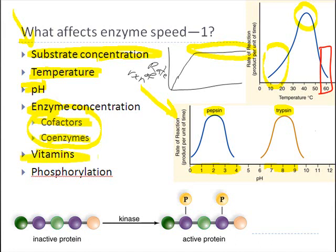Vitamins can function as cofactors — in fact, vitamins often function as cofactors and are frequently necessary to make a coenzyme that will then impact enzyme activity. Phosphorylation can also impact enzyme activity: by simply adding a phosphate group onto an enzyme, you can either activate it or deactivate it — more commonly, activate it. For example, here's an inactive protein — by putting a couple of phosphate groups onto that protein using an enzyme called kinase, we are able to activate that protein so it can perform work.